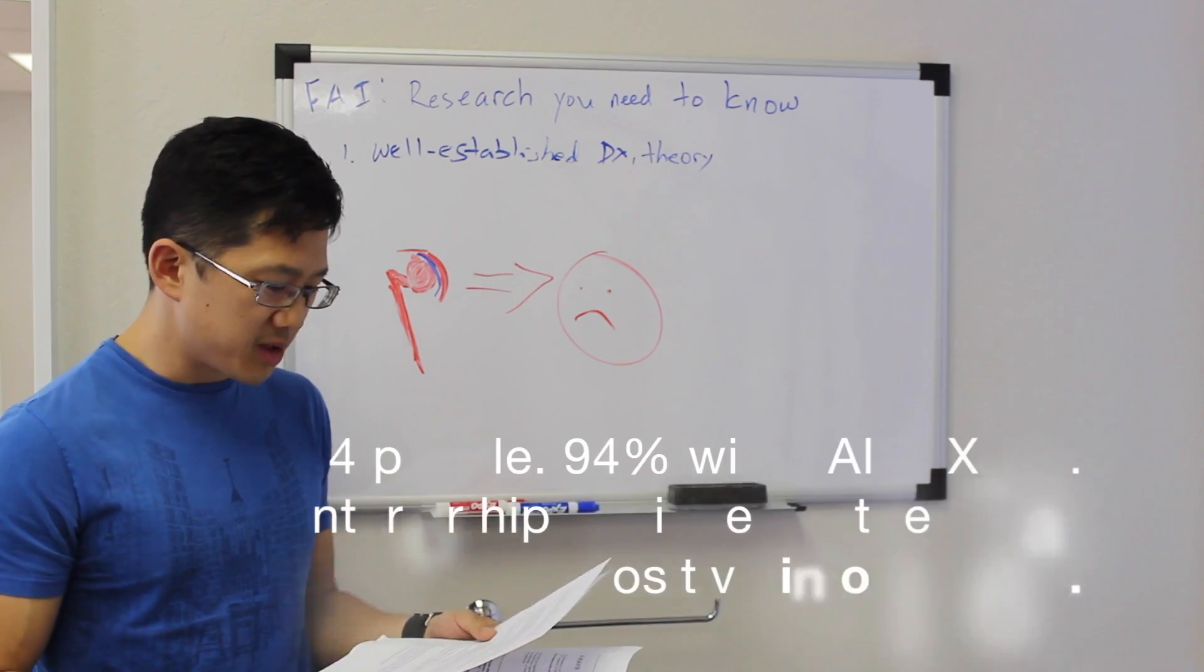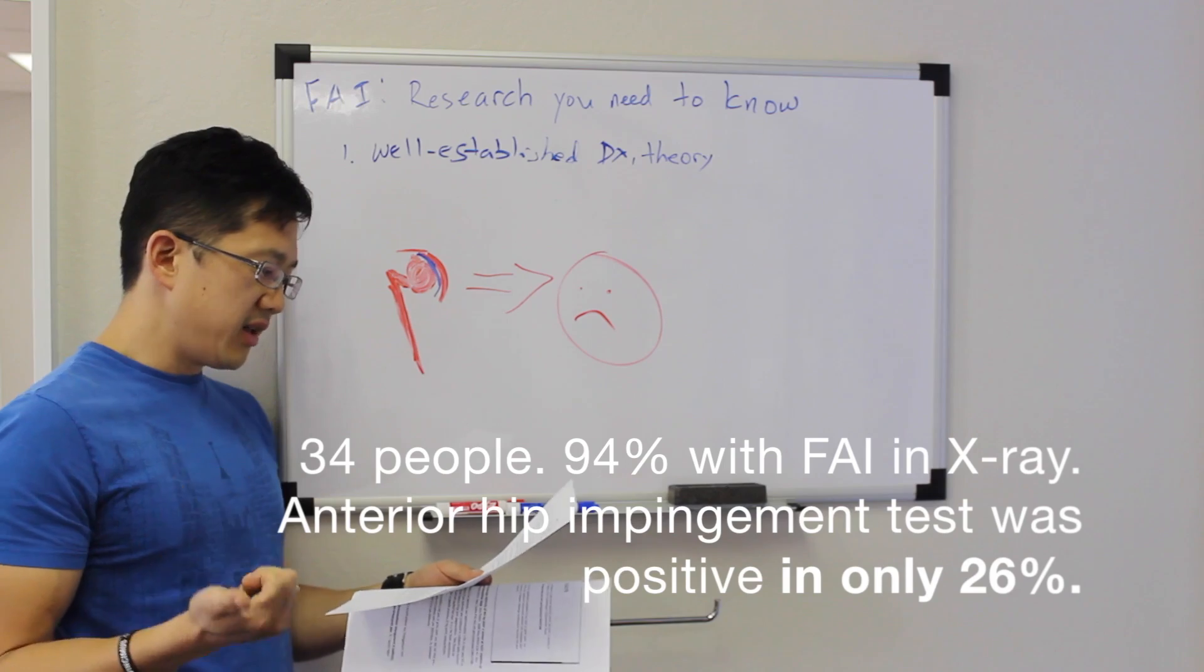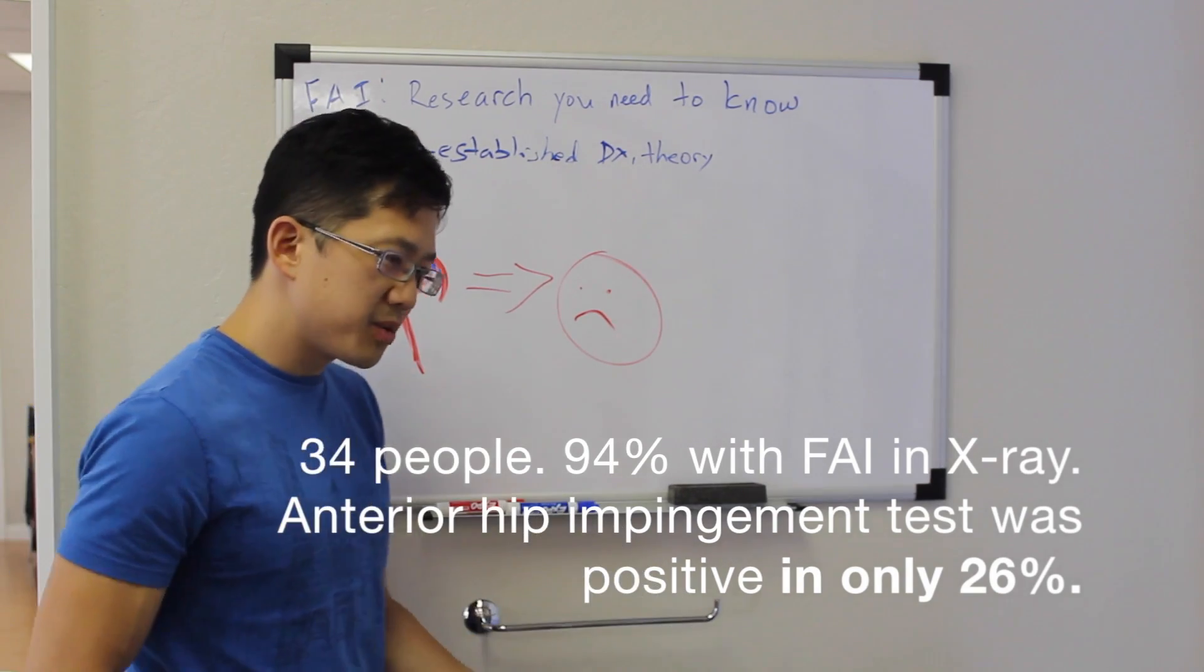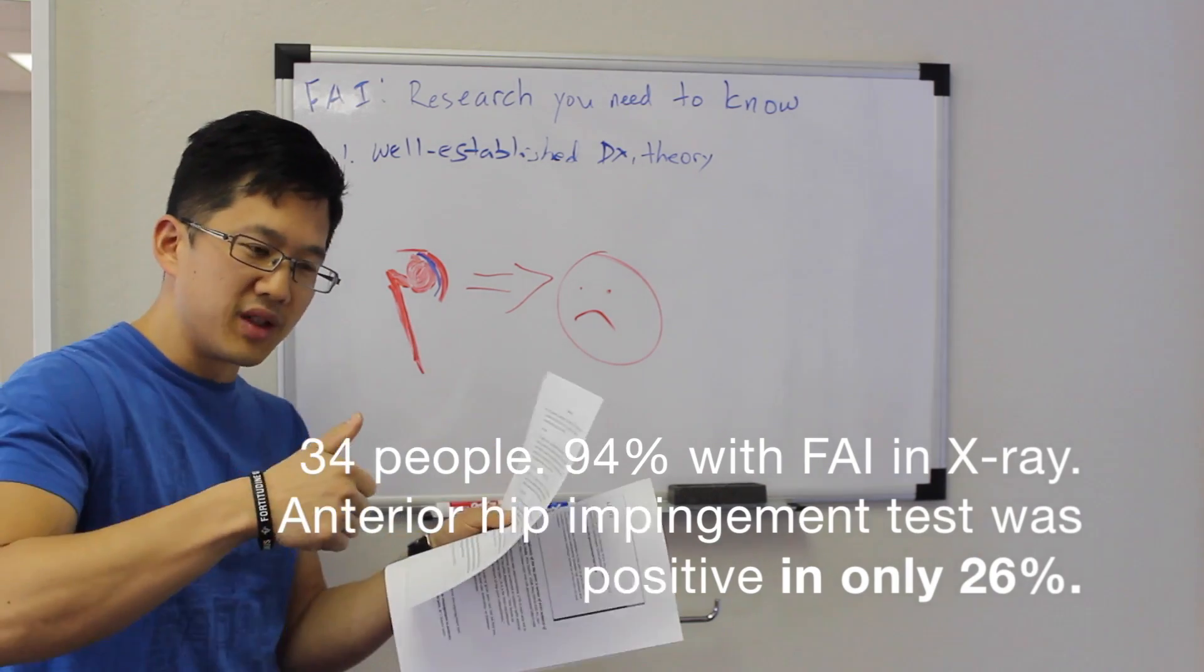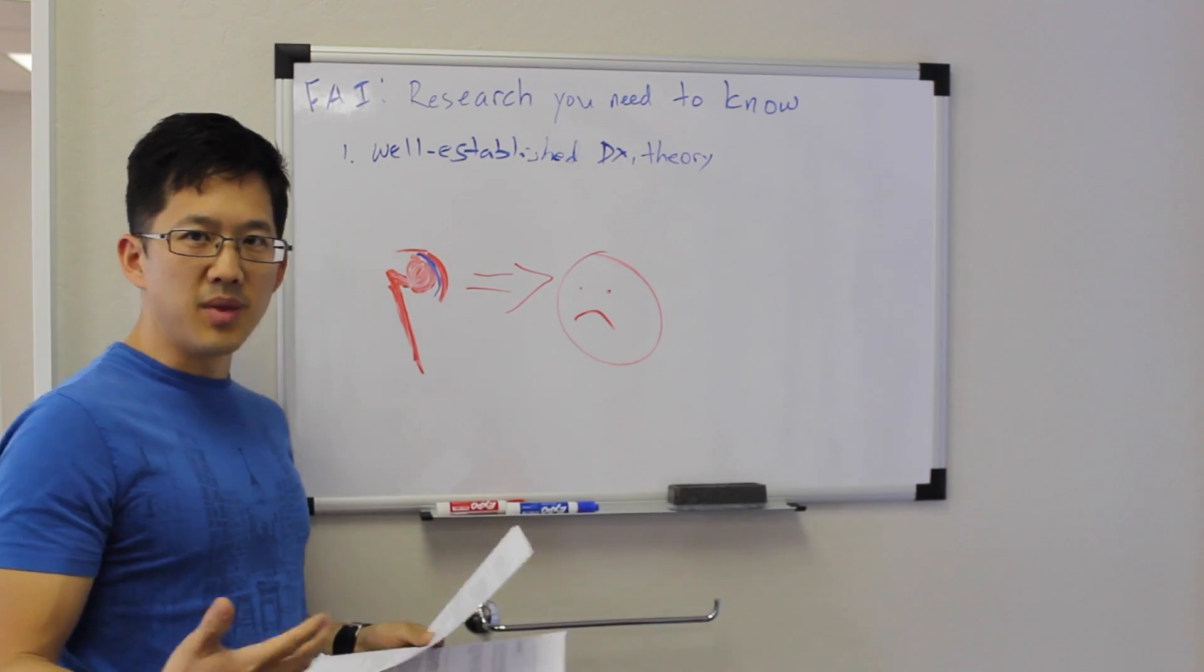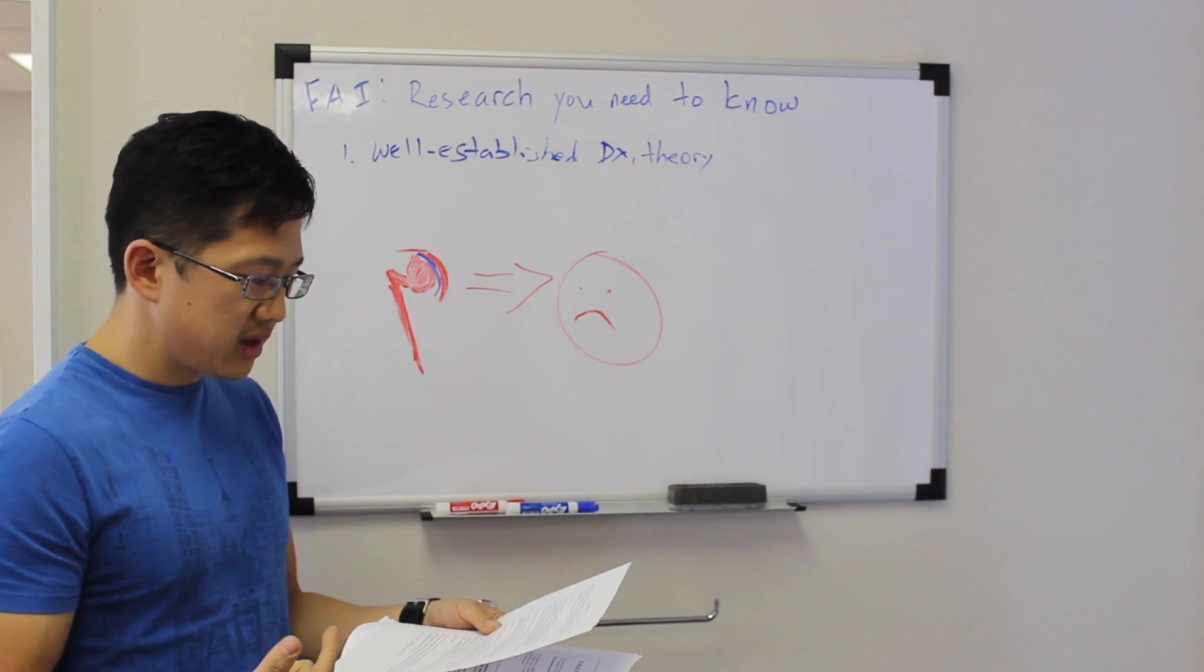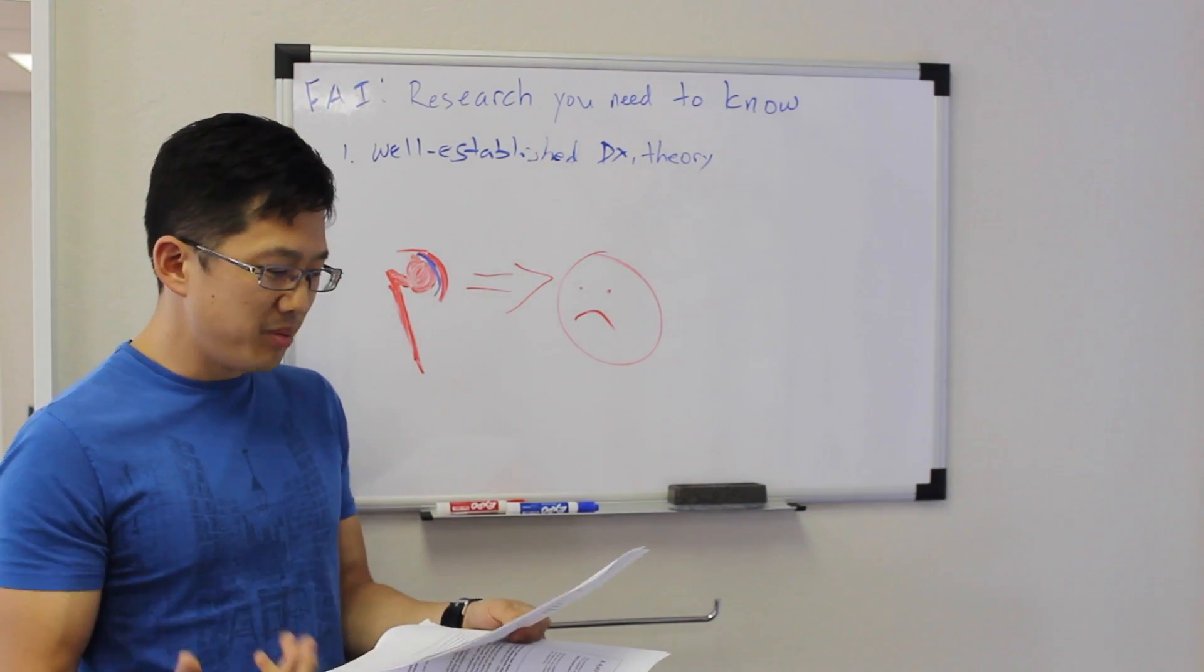Key points: radiological findings of hip impingement are often present. Okay, so you can have hip impingement. Findings of hip impingement are often present without the anterior hip impingement test being painful. So the anterior hip impingement test is basically a movement screen. You're basically kind of moving somebody's leg into a certain position and twisting. And if it provokes pain, that's supposed to mean that you have impingement happening as a result of this.